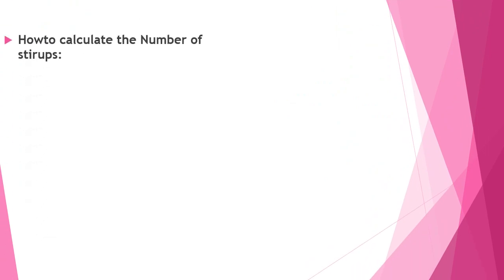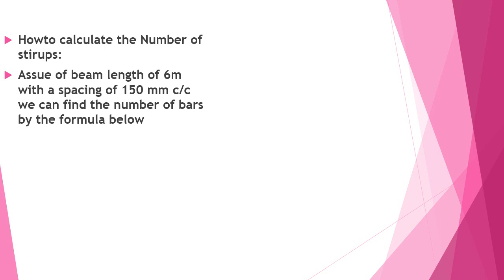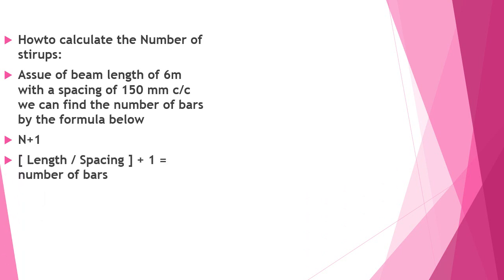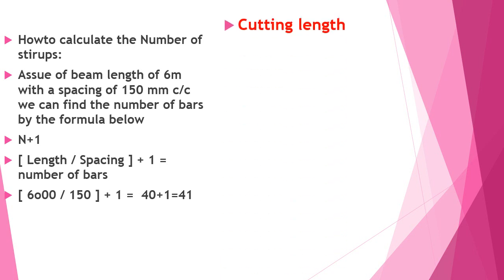How to calculate the number of stirrups? Let us assume a beam is 6 meters long with 150 mm center to center spacing. To find out the number of bars, the formula n+1 is used. In our case, it should be 6000 divided by 150, plus 1, which equals 41.